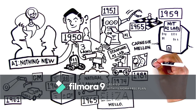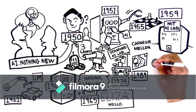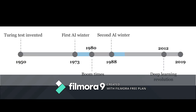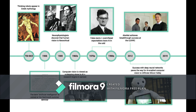AI was founded as an academic discipline in 1956, and in the years since has experienced several waves of optimism followed by disappointment, because there was no proper funding for AI research. That's why there was a dark phase and a stunted growth in AI research and development. For most of its history, AI research has been divided into sub-fields that often failed to communicate with each other.